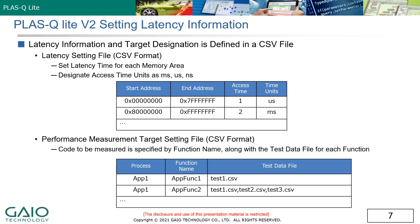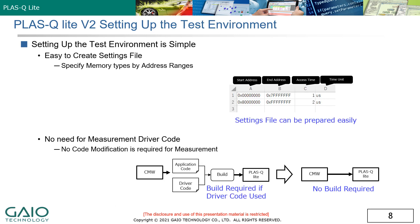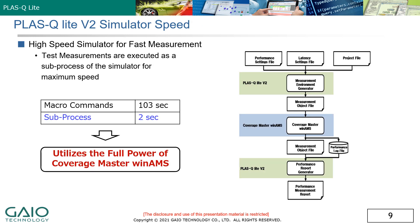Latency can be specified for blocks of memory according to the specifications of the memory device used. Setting latency is very easy — just specify the memory ranges and the latency to be used for each range. The measurement does not require any dedicated code modifications. PLOS Q-Lite uses the high-speed simulator of Coverage Master to complete test measurement in the fastest time possible.